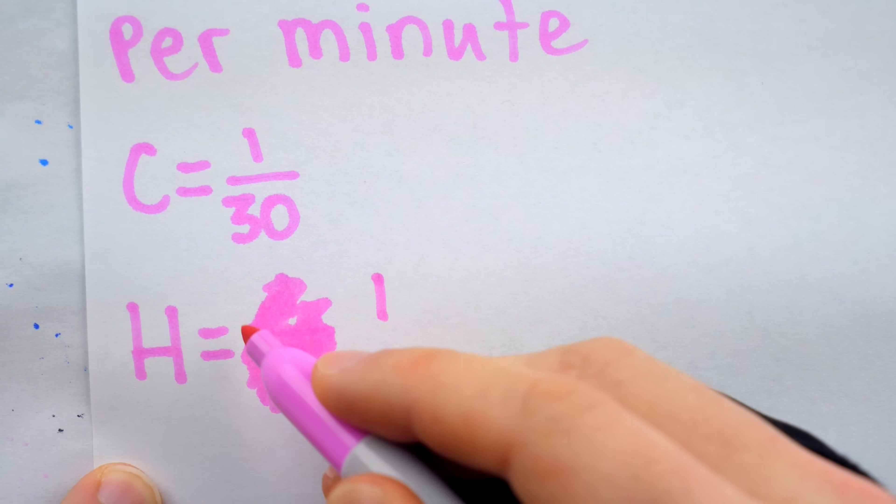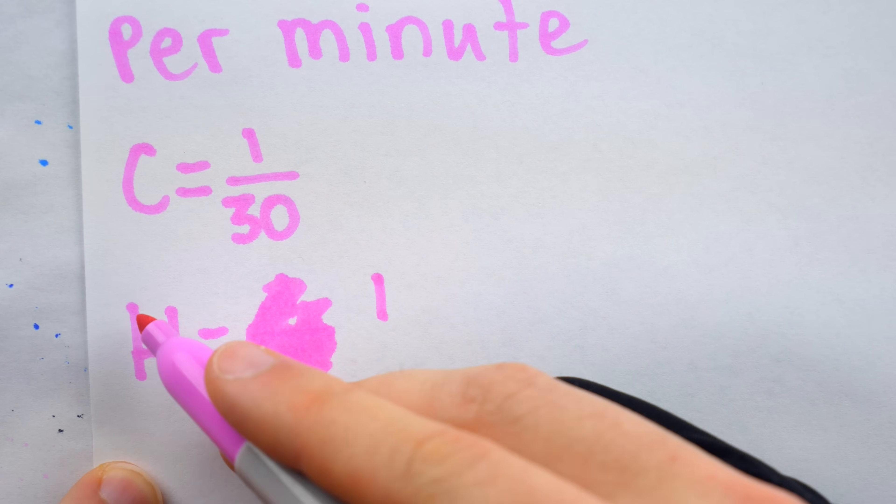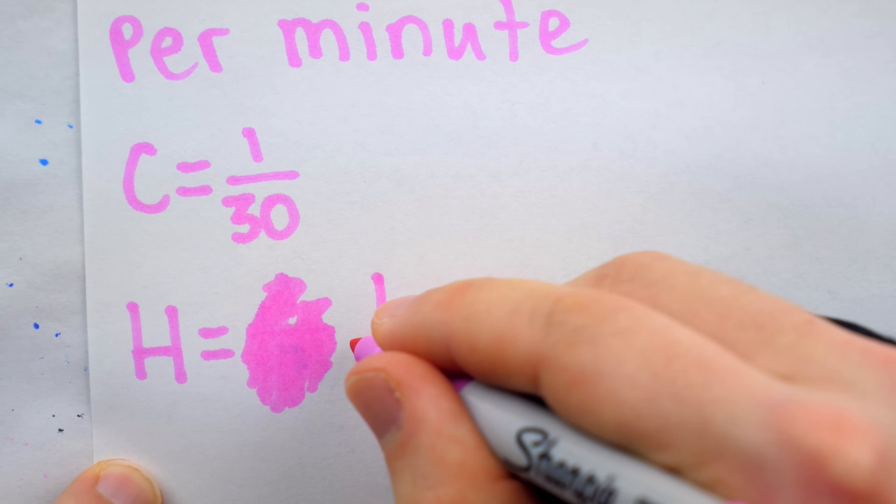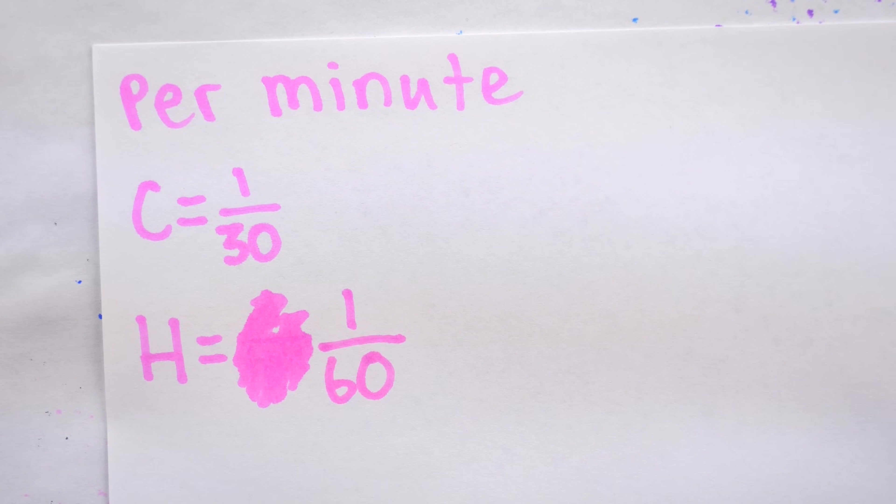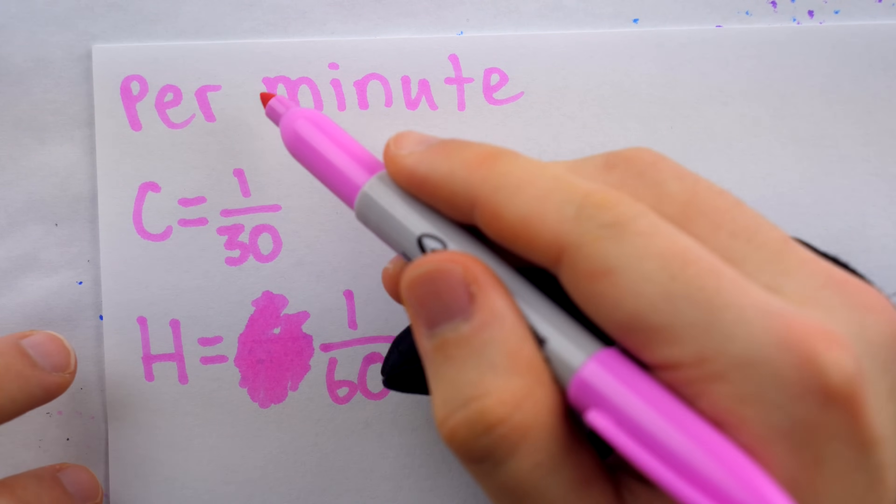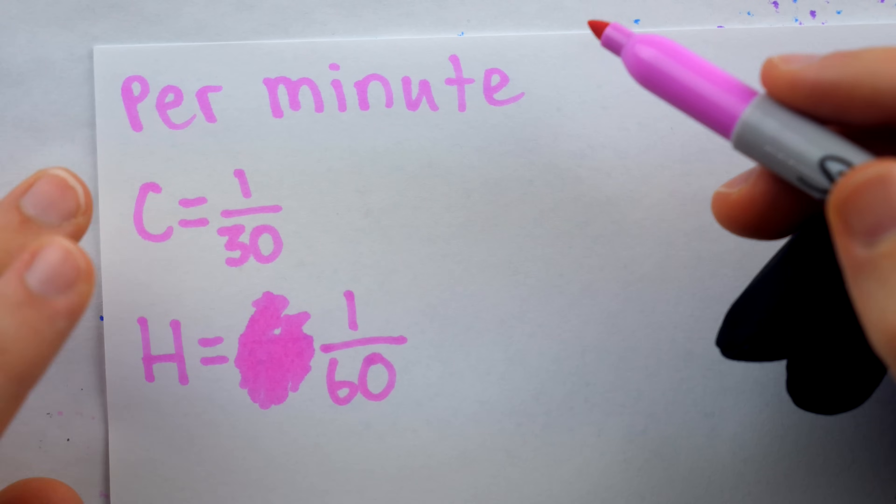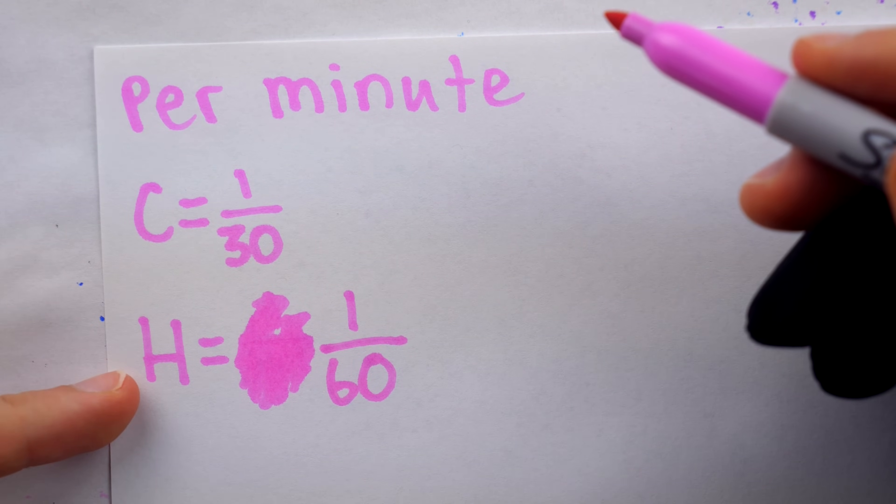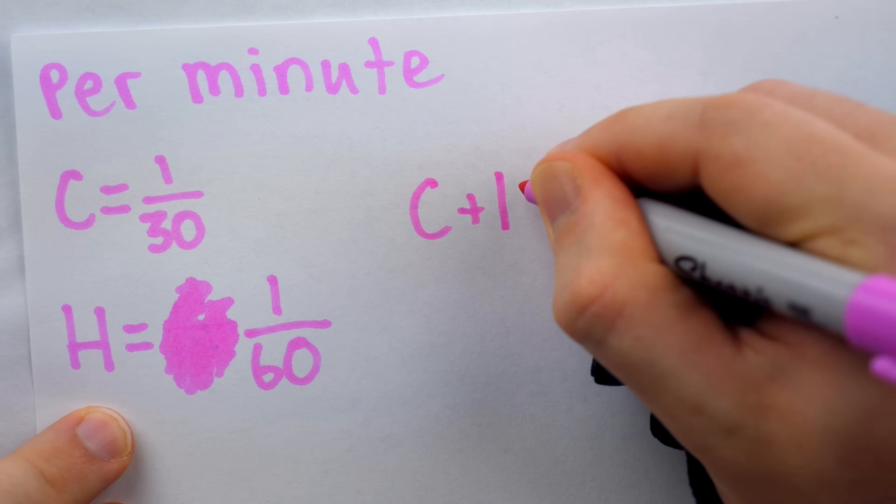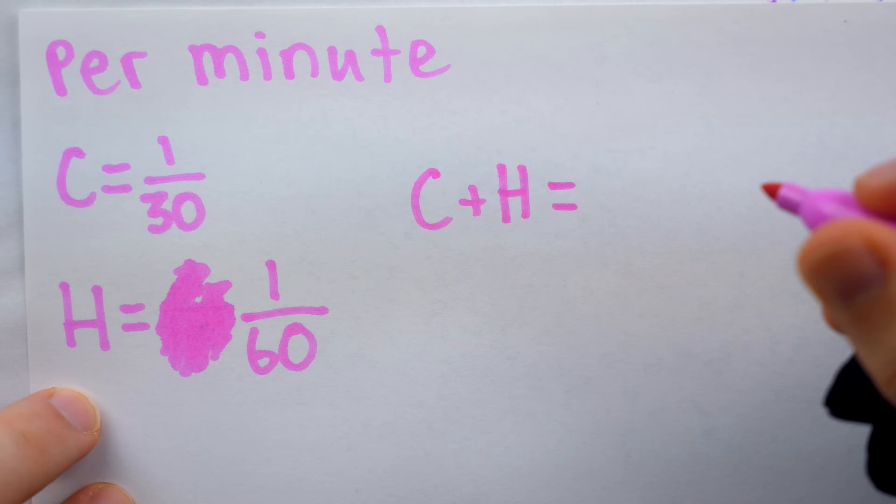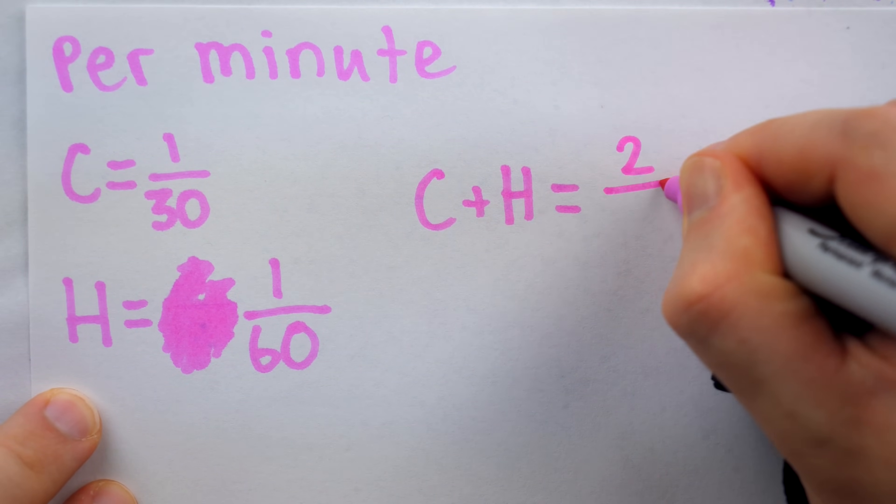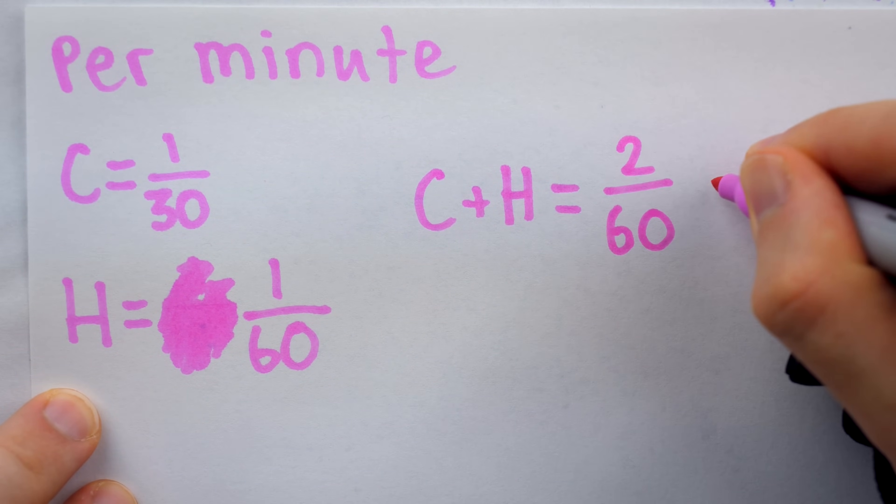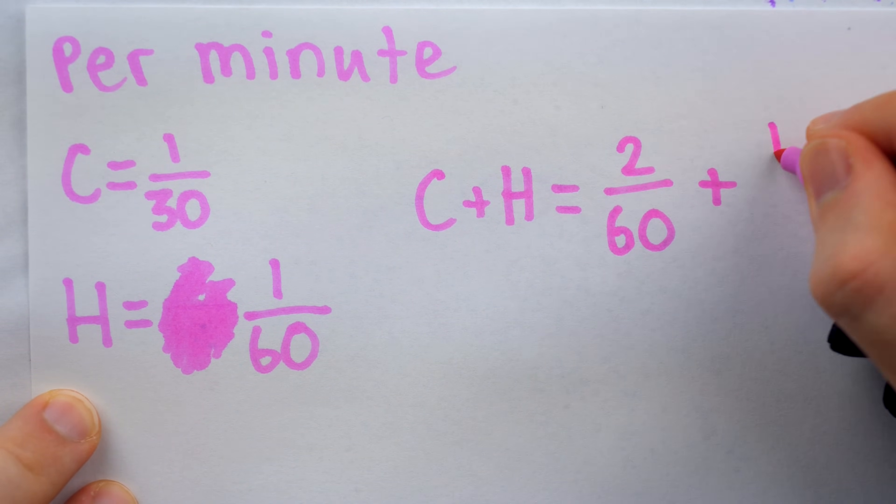Similarly, since it takes the hot water faucet an hour to fill up the tub, it fills up 1/60th of the tub every minute. Then we can simply add these rates together to get the per minute tub filling rate when the cold and the hot are both running simultaneously. So we're adding the flow rates of the faucets together. To get common denominators, we can multiply 1/30th by 2 over 2, so it becomes 2 over 60, that's the flow rate of the cold water, plus that 1 over 60 for the hot water.